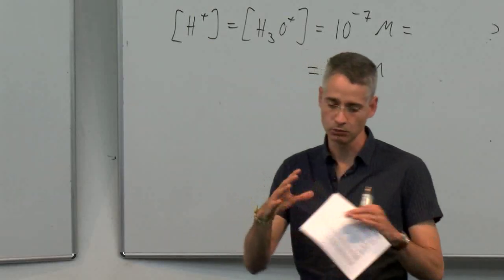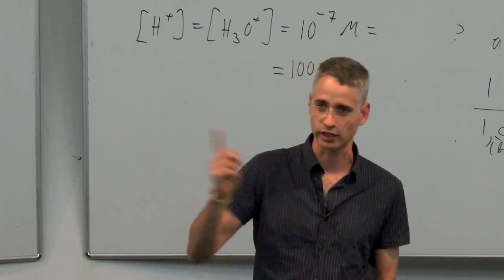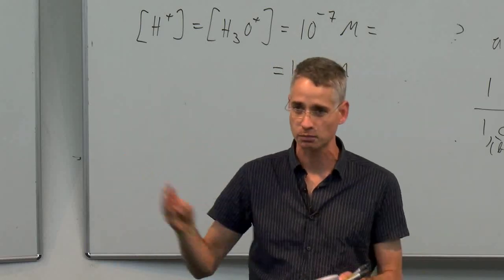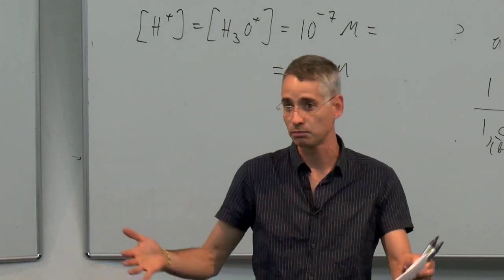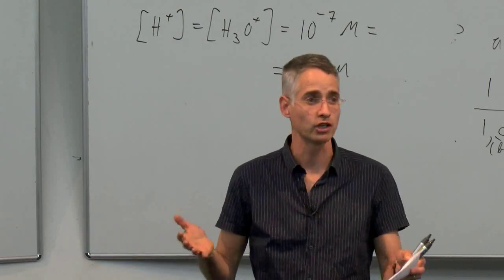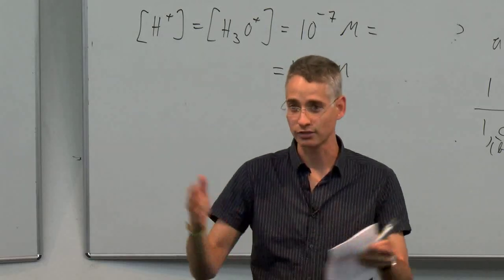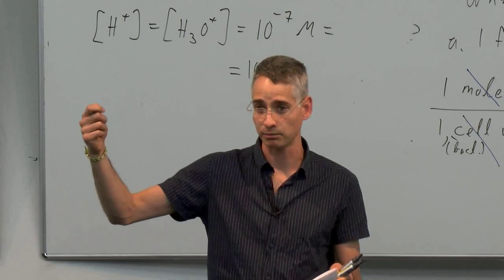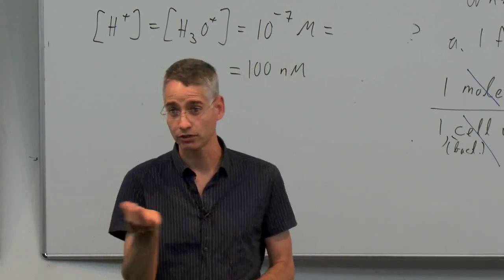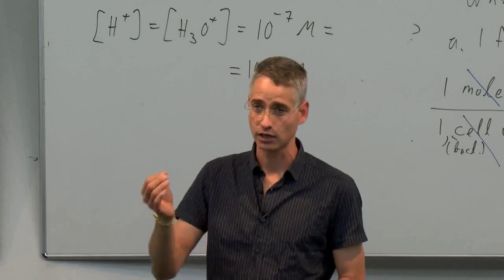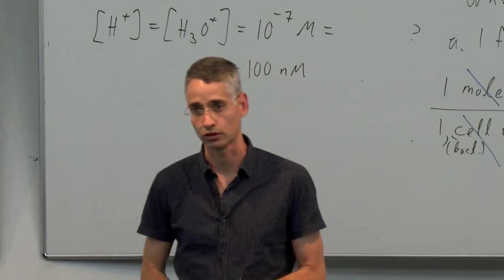At pH 10, the average number of protons is 0.1 — super rare to get one. For organisms living in lakes at pH 10, they use smart tricks. One is using sodium ions and the sodium potential as an alternative to building a proton gradient — as a surrogate for the proton motive force.